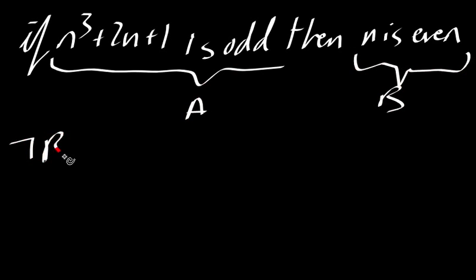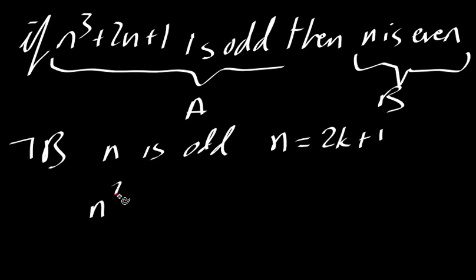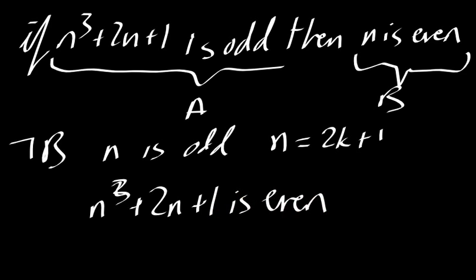We start with our not B, which is n is odd. So that means by definition, we can write n as some 2k plus 1. It's just the definition of an odd number. And we want to show that n cubed plus 2n plus 1 is even. If we can show that, then our proof will be done.